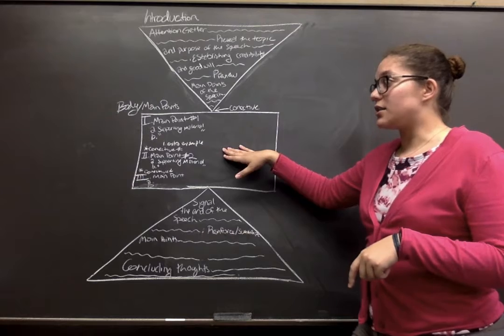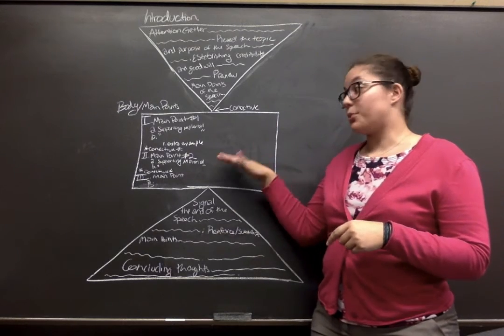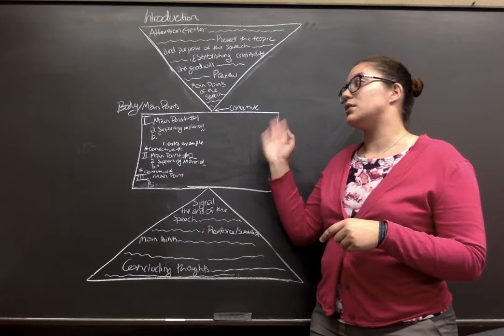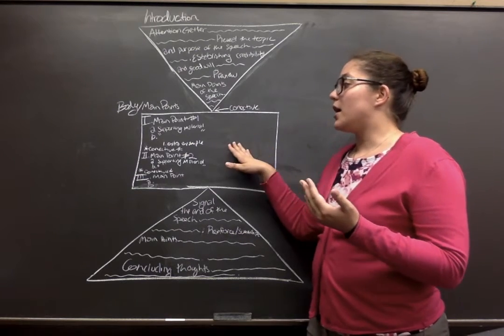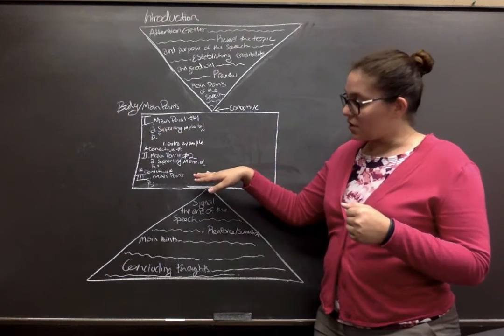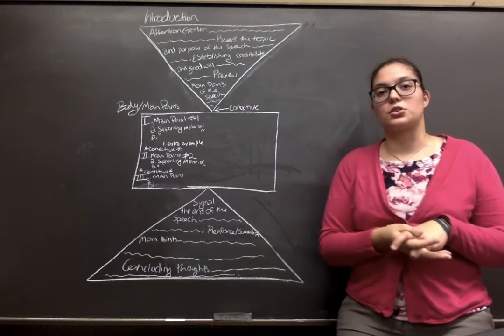After your connective, you're going to do your main point number two. And that's going to have supporting materials A and B and some extra examples if you need it. And then a connective, followed by main point number three. And its supporting materials and extra examples.